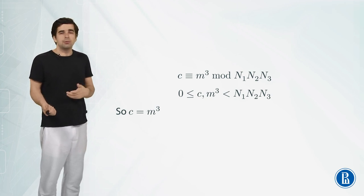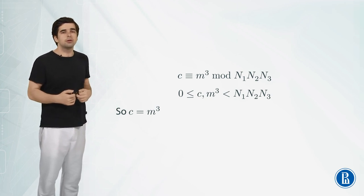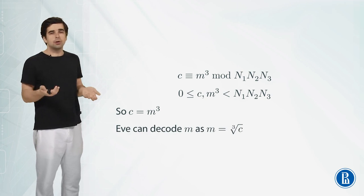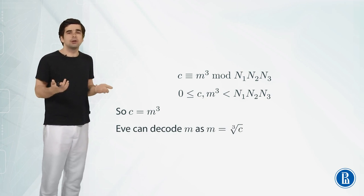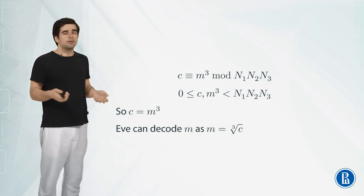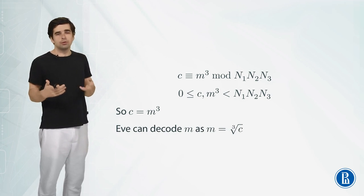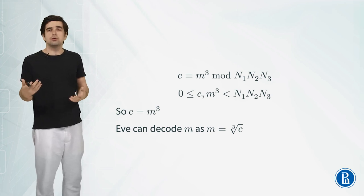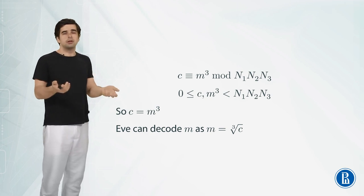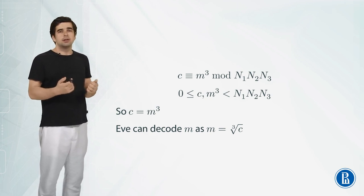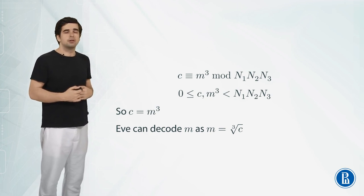And then if we know c we constructed it using Chinese remainder theorem and Euclid's algorithm then we can just decode m by computing the regular cube root. Not just some fancy modular cube root but just the regular cube root of an integer number c to get m. And this is the way Hastad's attack works in this simplified case.